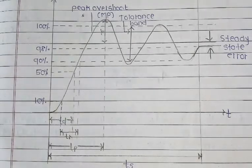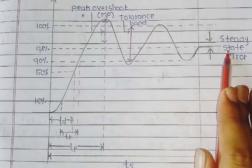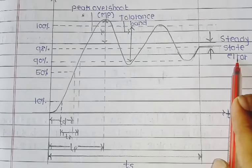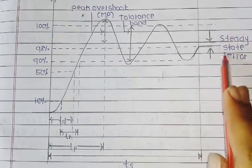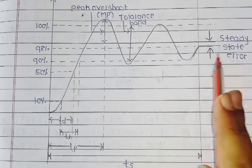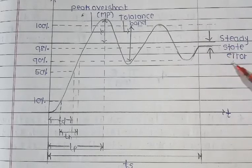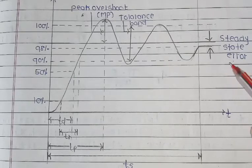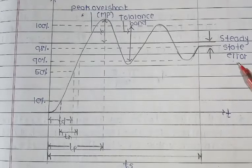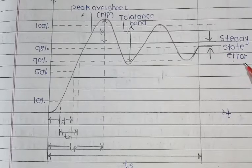The last parameter is steady-state error, denoted as Ess. It is defined as the error between the actual output and the desired output. Whatever the actual output is versus what the desired output should be — the error between them, as time tends to infinity. Mathematically, Ess equals limit as t tends to infinity of bracket r(t) minus c(t).